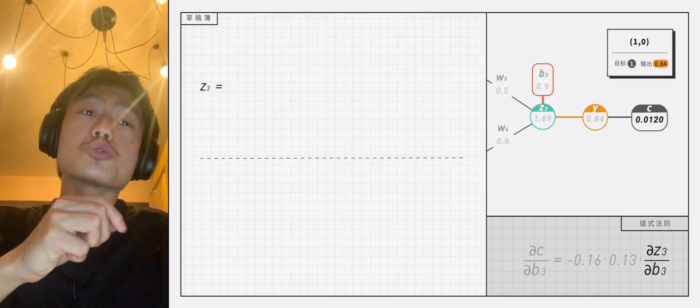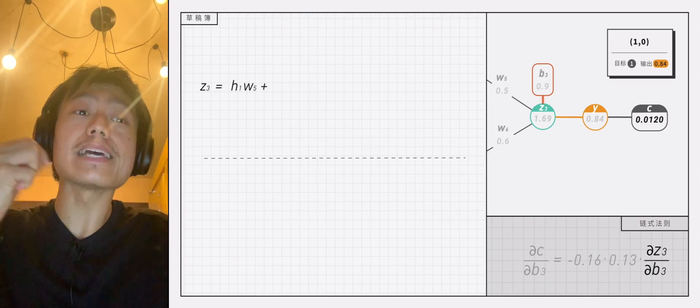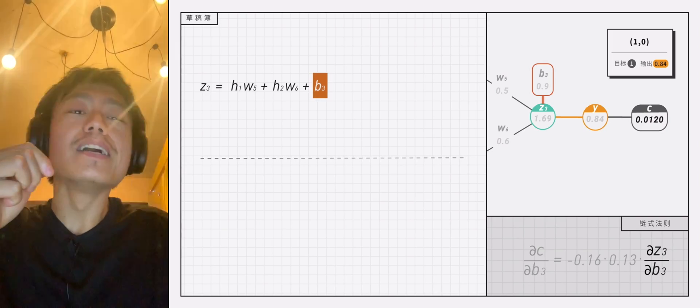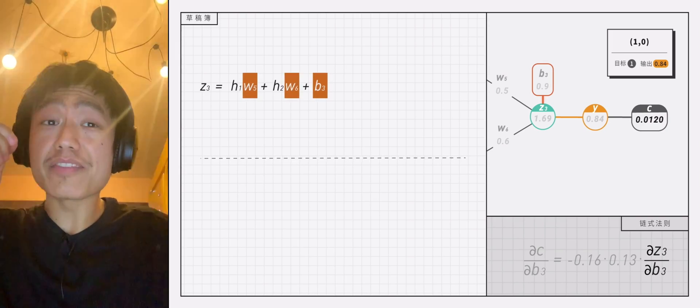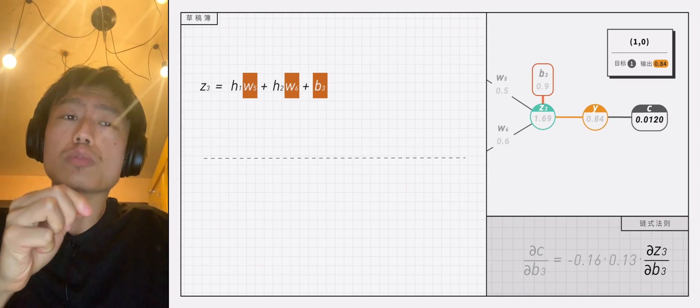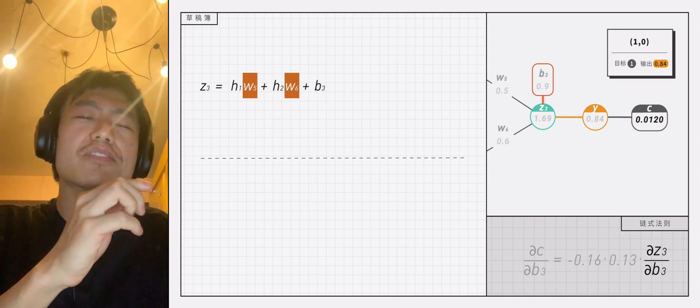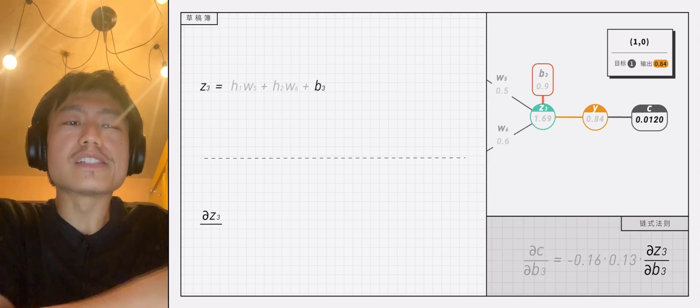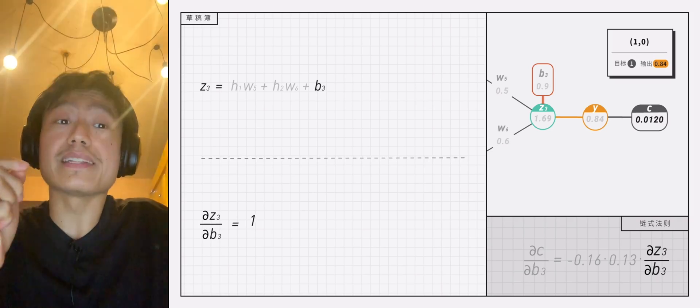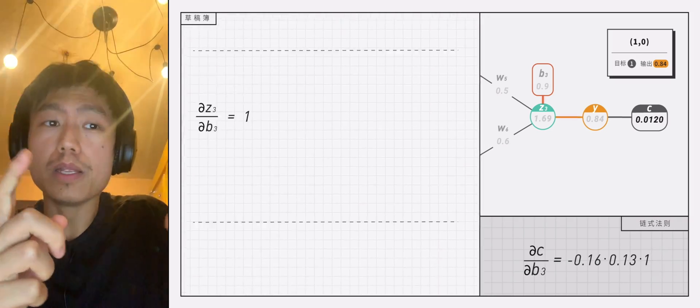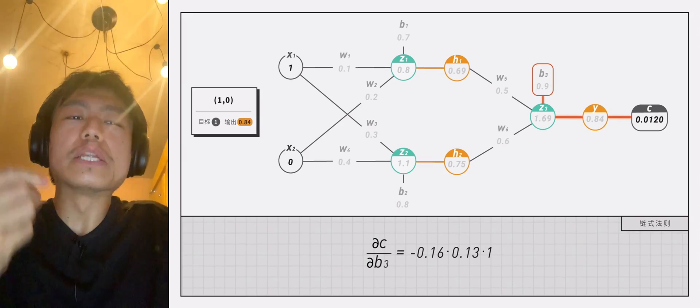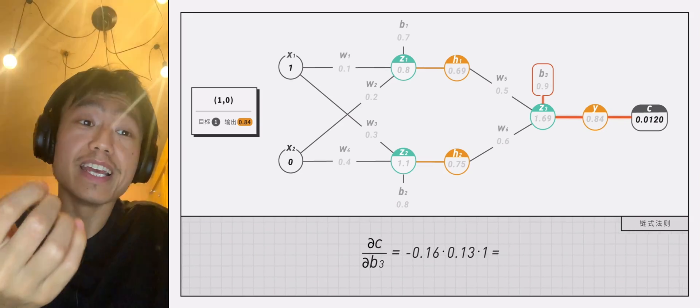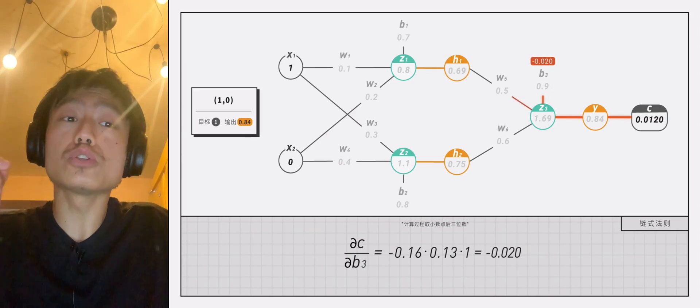z3 equals h1 times w5 plus h2 times w6 plus b3. The variables here are b3, w5, and w6. To find the partial derivative is to take the variables other than b3 as a constant to derive. So dz3 divided by db3 equals 1. When you multiply these three terms, you get that the partial derivative of c for b3 is equal to negative 0.020.